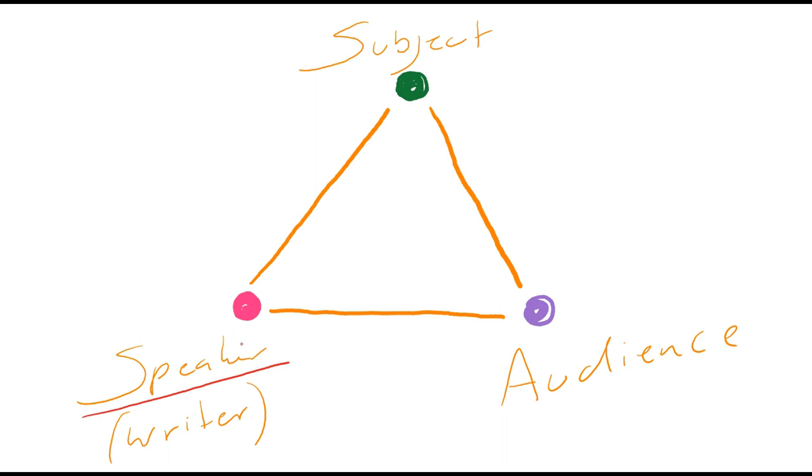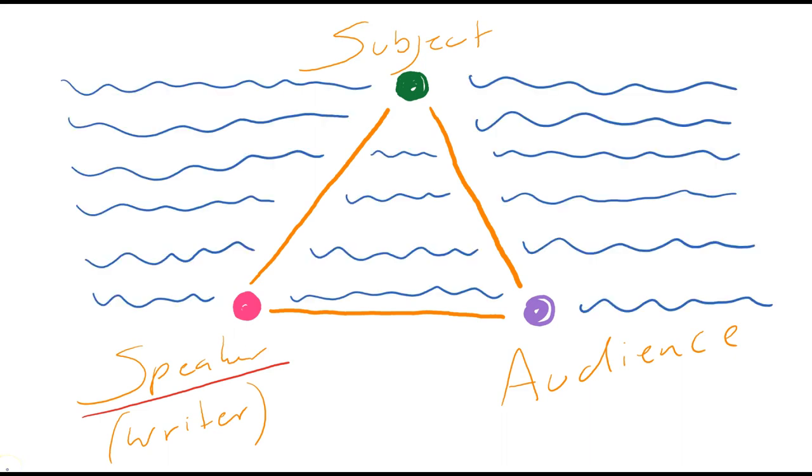So, the triangle sits in what we call the context. The context is the situation, the atmosphere, the historical setting even, that the writing is taking place in. It might seem less than thrilling to label this triangle, but it is pretty important to the success of your essay.